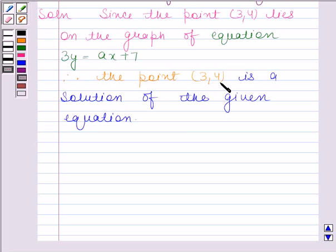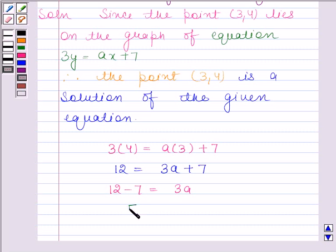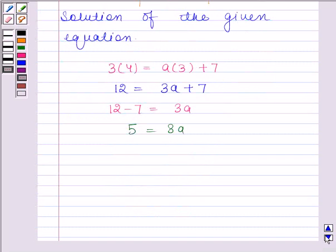Now, here x equals 3 and y equals 4. So by substituting x as 3 and y as 4, we get 3 times 4 equals a times 3 plus 7. This implies 12 equals 3a plus 7. 12 minus 7 equals 3a, and this implies 5 equals 3a, thus a equals 5/3.